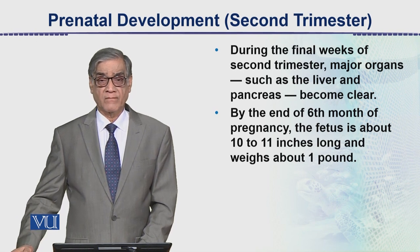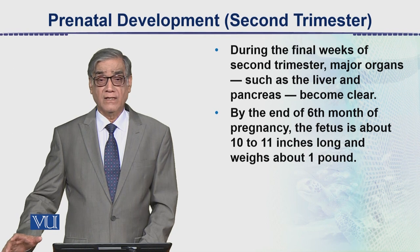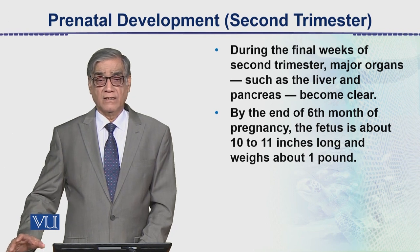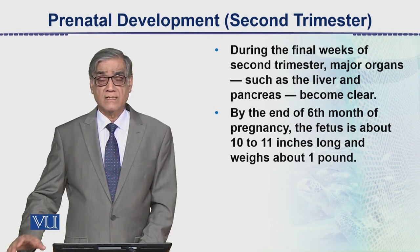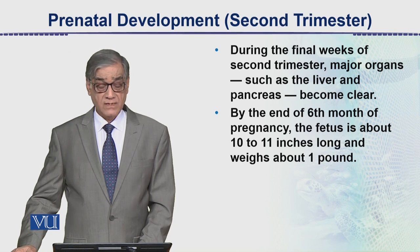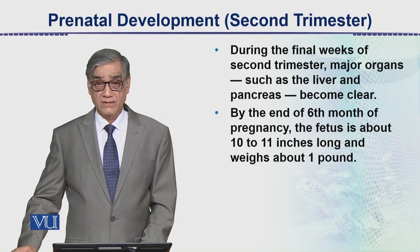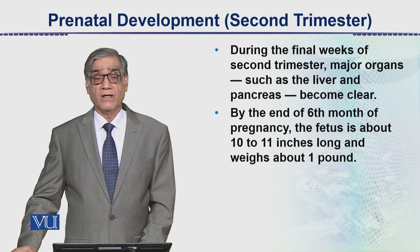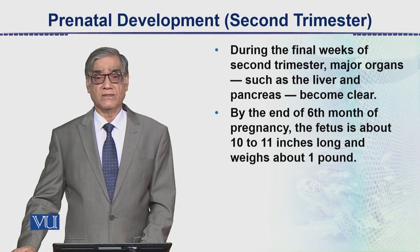اس کے بعد جو final trimester ہے اس میں growth بہت fast ہو جاتی ہے، اور externally signs of pregnancy clearly دیکھے جا سکتے ہیں۔ So this is all about the second trimester in human development.